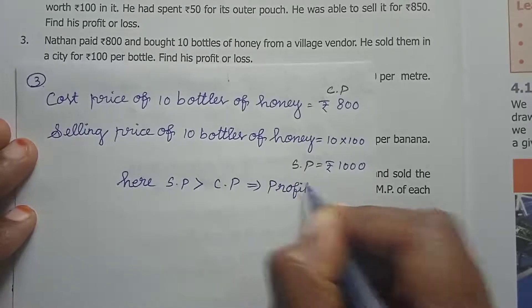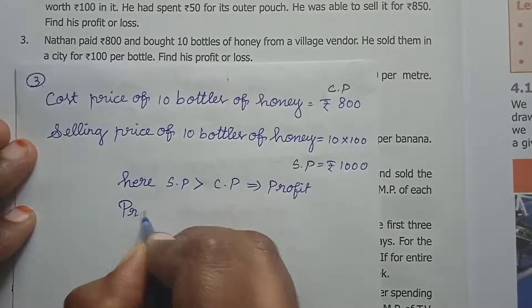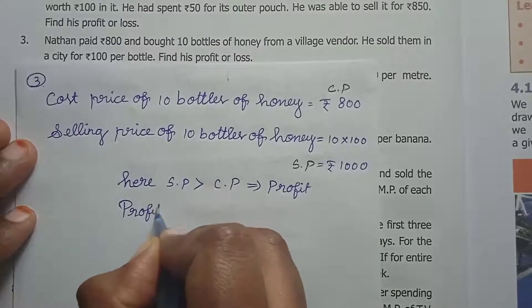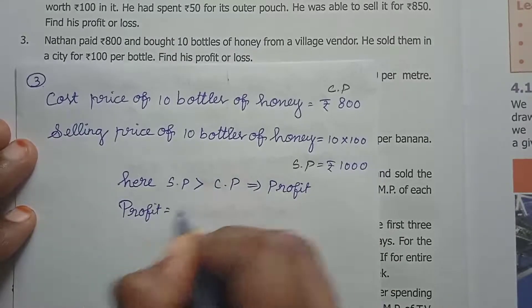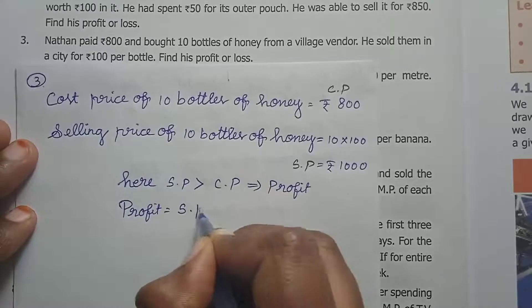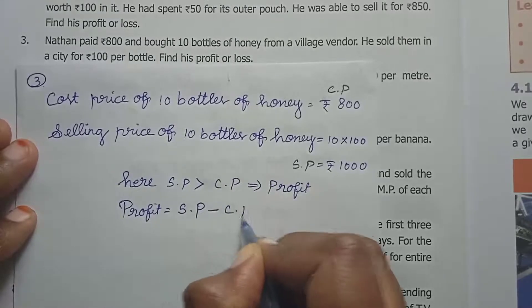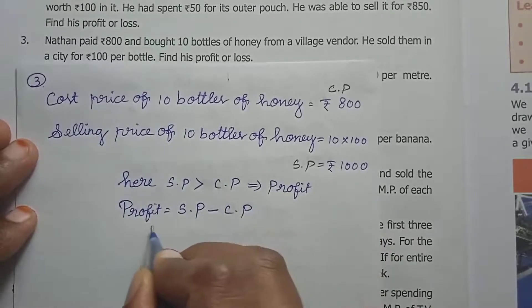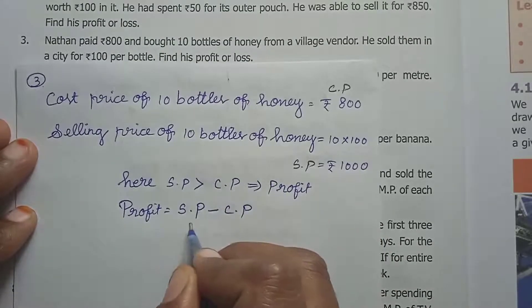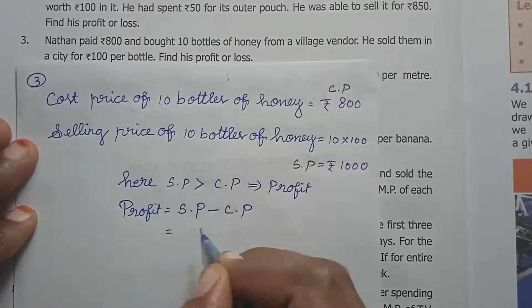So it is a profit. The formula for profit: if SP is greater than CP, then Profit = SP minus CP.